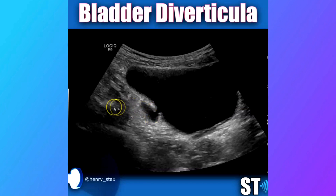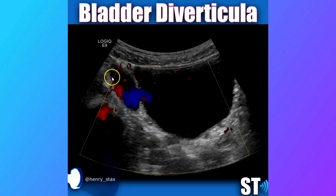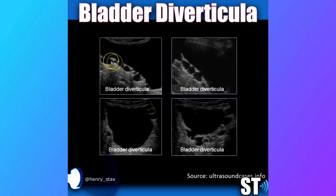You can also see fluid entering and exiting with color Doppler, just as you would use it to see jets going into the bladder — you can see the urine going into and out of the pouch, oftentimes in a to-and-fro pattern. And it can be singular or many, as you see here with many little diverticula.